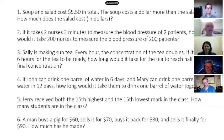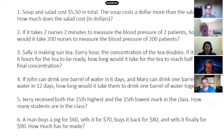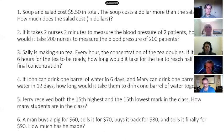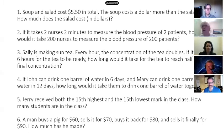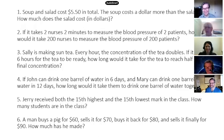Here are problems not in Shane's original three. If John can drink one barrel of water in six days and Mary in twelve days, how long would it take them together? If Jerry received both the 15 highest and the 15 lowest marks in the class, how many students are in the class? Finally, a man buys a pick for $60, sells it for $70, buys it back for $80, sells it for $90 — how much has he made? As far as my judgment goes, only the first question is horrible. The rest are fine. Shane disagrees.